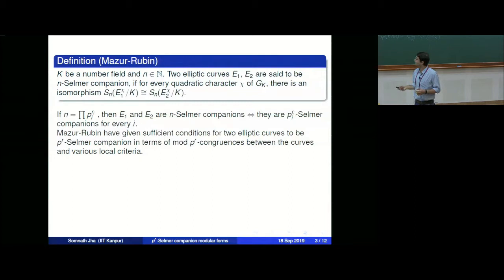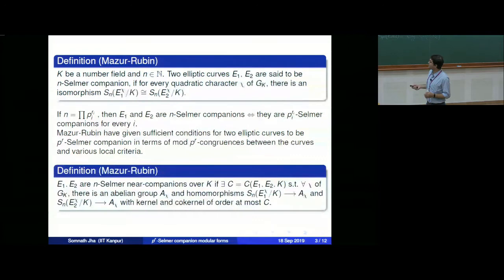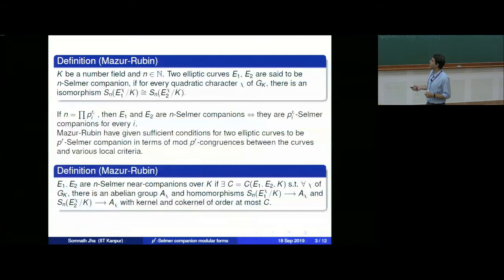The converse is also expected. In the same paper, they define E_1 and E_2 to be near n-Selmer companions: it need not be an isomorphism, but there exists an abelian group A_χ and a homomorphism from S_n(E_1^χ/k) to S_n(E_2^χ/k) whose kernel and cokernel have order at most c — a constant not depending on χ. So the F_p-rank difference of the p-Selmer groups of E_1^χ and E_2^χ are bounded by an absolute constant.